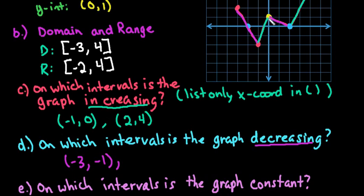And then from negative 1 to 0, it's increasing. And then at 0 over to 2, it decreases again.